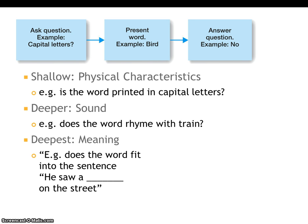Participants were given three different levels of processing. At the very shallow level they were asked: 'Is the word printed in capital letters?' At the next, slightly deeper level, they were asked: 'Does the word rhyme with train?' — requiring a little more thinking. At the deepest level, they had to do a fill-in-the-blank activity: 'Does the word fit into the sentence — He saw a blank on the street?' At this deep level they were actually starting to process meaning.